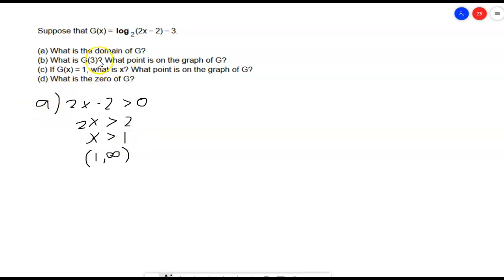Our B says, what is G of 3? This is the function evaluated at 3, and then what is that point? So, G of 3 is, once again, we just take that function, and wherever there's an x in it, we're going to put a 3 in there. So, log base 2, and then this is going to be 2 times 3 minus 2 minus 3. So, that's how we define G of 3. That's going to be, we have an input of 3, and we'll have an output that will be our y value. So, this is equal to log base 2, and this is going to be 6 minus 2 is 4. So, log base 2 of 4 minus 3.